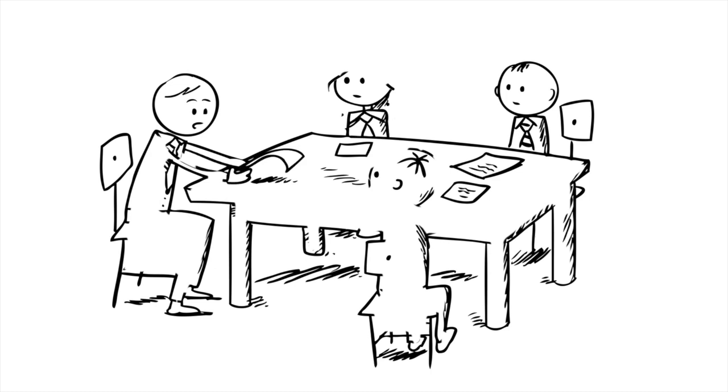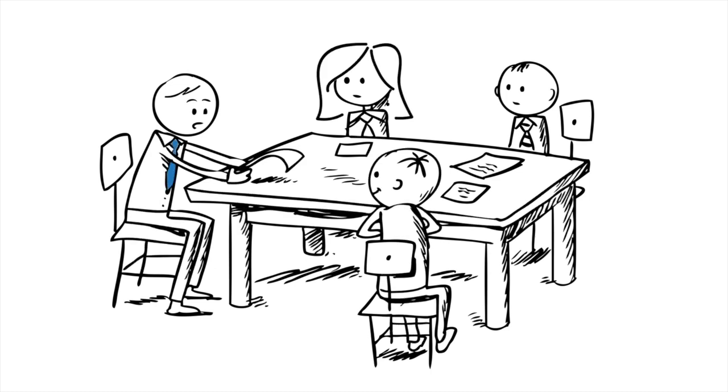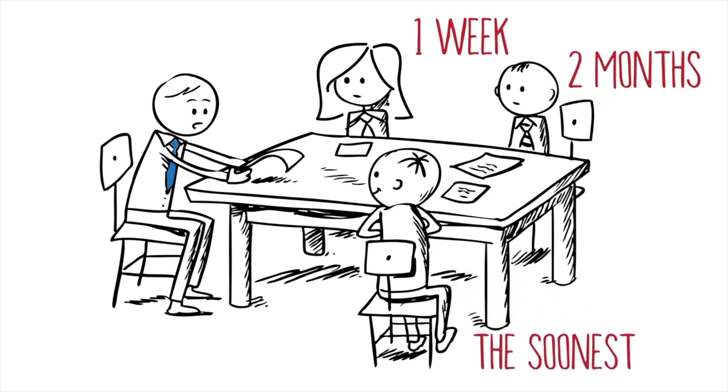One sales rep tells Bob that his company can have them up and running in a week if he signs the contract that day. And another tells him two months and then everything in between. Who does Bob believe? And the pricing? All over the place for really no apparent reason.